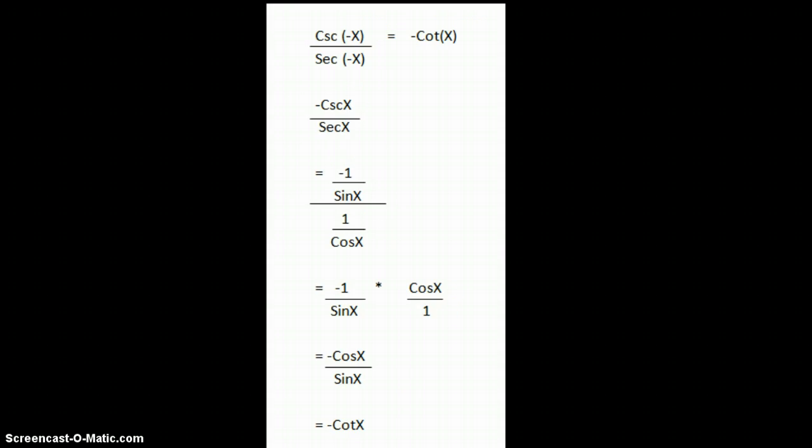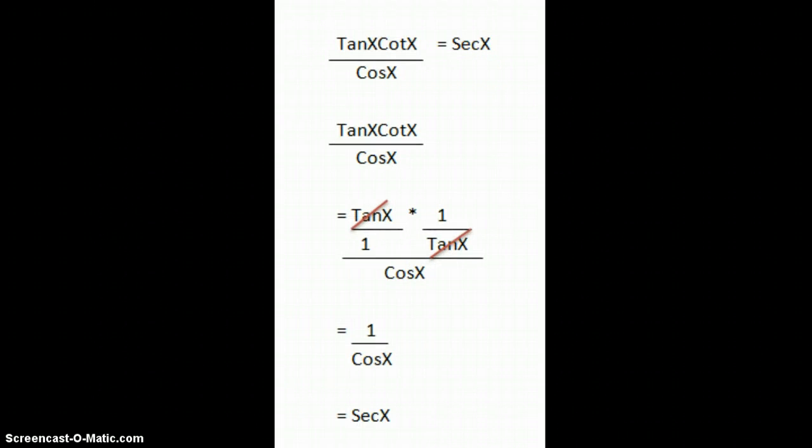Okay. All right, example five is another verification problem. We have tan x times cotangent x over cosine x equals secant of x. This one's pretty easy because tan x and cotangent x cancel out. I've drawn that out for you. Tan x over 1 times 1 over tan x is going to equal 1 over 1. So we just get the 1 on top over cosine of x, which is equal to secant x by the reciprocal identity.